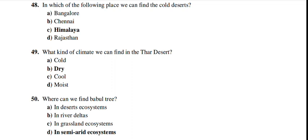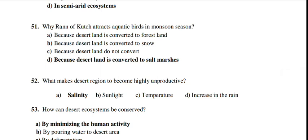In which of the following places can we find cold deserts? The Himalayas. What kind of climate can we find in a desert? Dry. Where can we find a bubble tree? In a semi-arid ecosystem. What attracts aquatic birds in a monsoon-rich season? Because desert land is converted into salt marshes — so the answer is D.